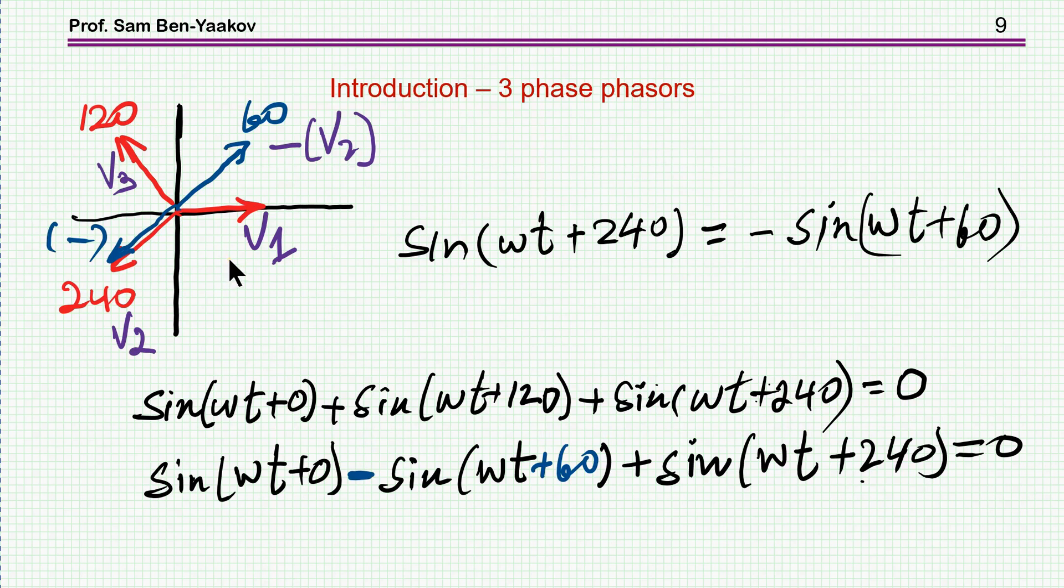I'm going to look now at a somewhat different situation in which I have three waves, V1, V2 and V3, but V2 now is at 60 degrees but has a negative magnitude. Obviously, if this is 60 degrees and it is negative magnitude, it is like 240. So therefore, sin omega t plus 240 is like minus sin omega t plus 60 degrees. So therefore, as we had before, when we sum all of these is zero. If we have sin omega t zero phase, minus sin omega t 60 degrees, this is this one but with a minus sign so it's going actually this way, plus sin omega t plus 240 is also equal to zero.